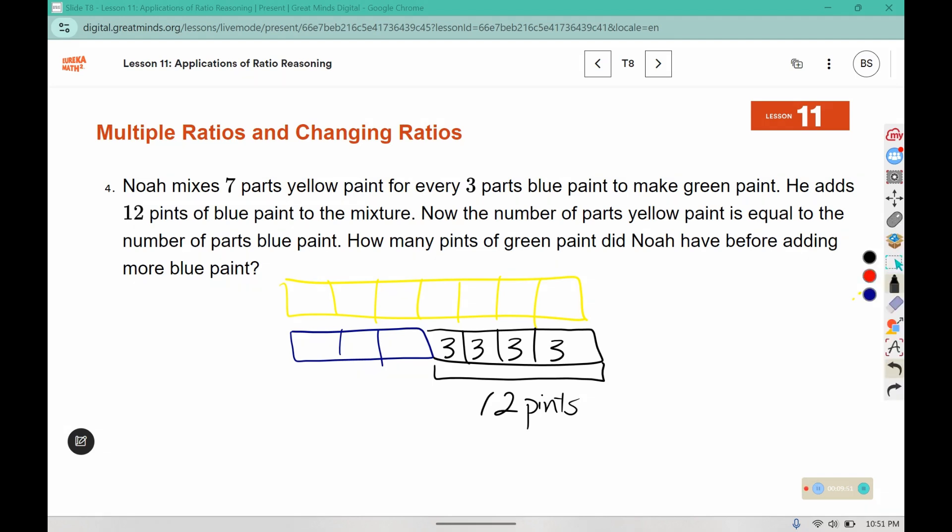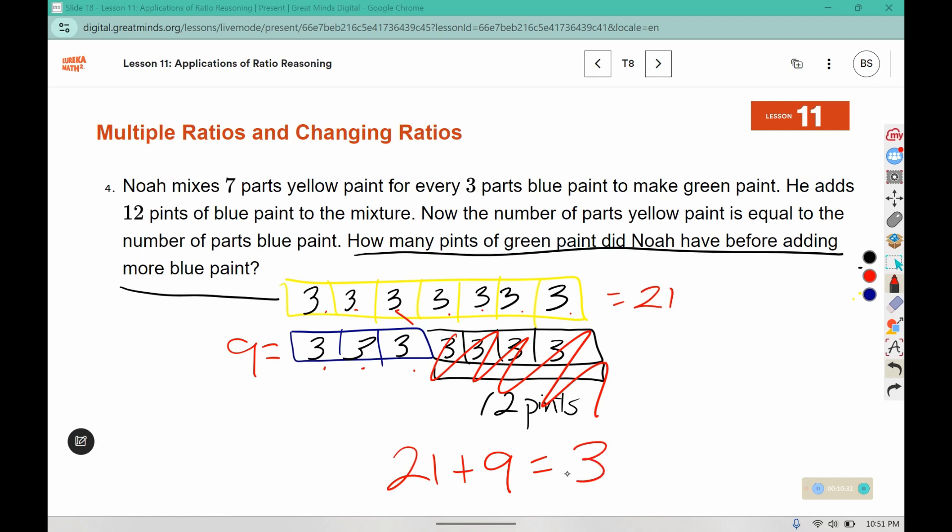Now keep in mind, they have to be equal. It asks, how many pints of green paint did Noah have before adding more blue paint? So we're going to ignore the extra blue paint and figure out how much paint he had before. Remember, he mixed the yellow and the blue to make green, so we are going to combine those. Here I have three, six, nine, twelve, fifteen, eighteen, twenty-one. And here we had three, six, nine. So for the green, 21 plus 9 equals 30 pints of green paint.